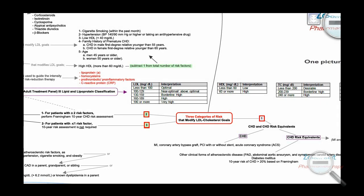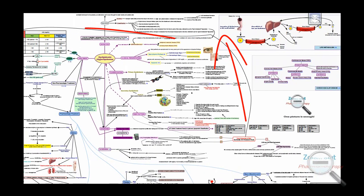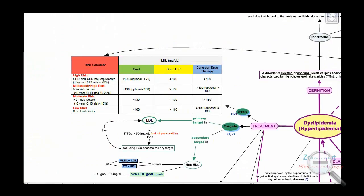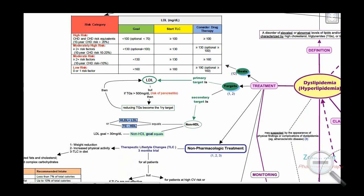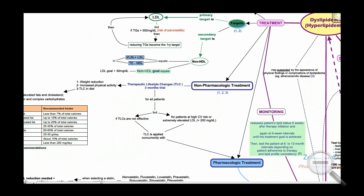These risk categories are linked to treatment goals. The treatment part of the map starts with dyslipidemia treatment goals, classified according to the risk category, with the primary target of treatment being LDL. Non-pharmacological treatment includes therapeutic lifestyle changes and dietary recommendations.